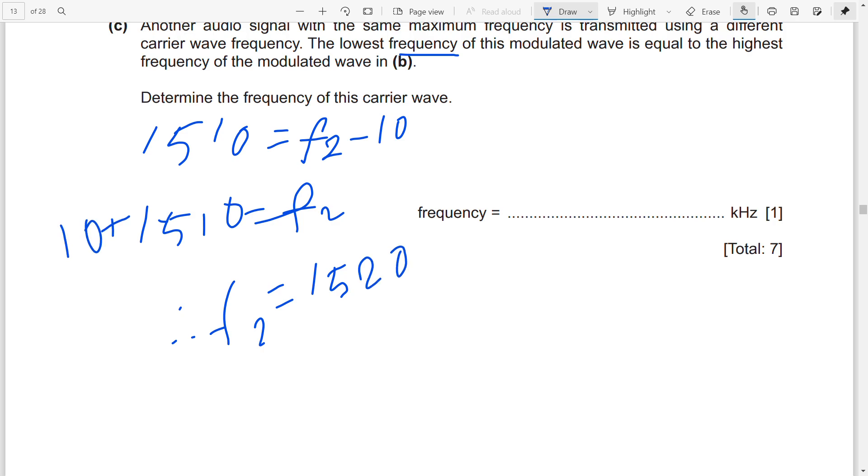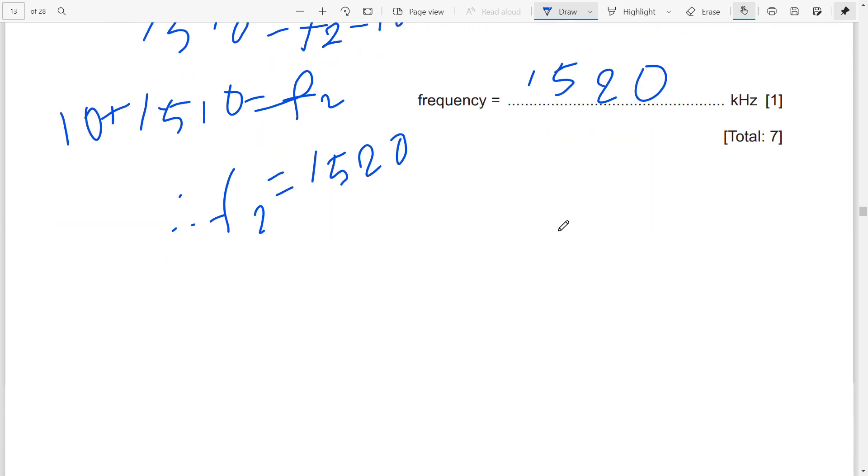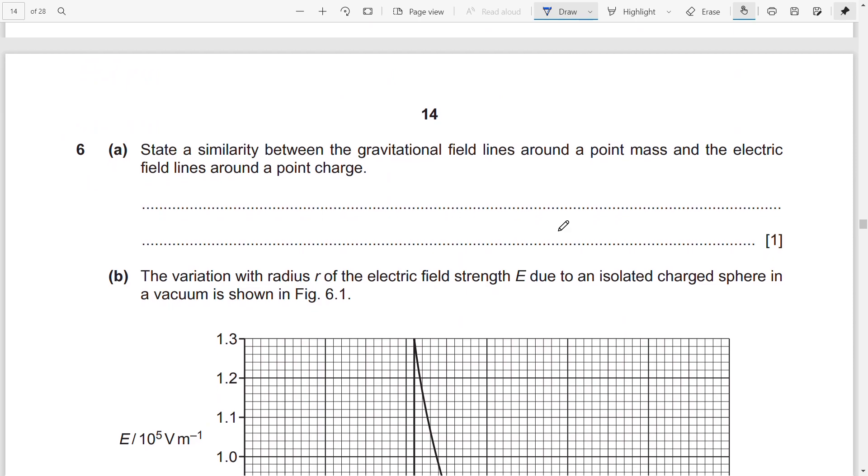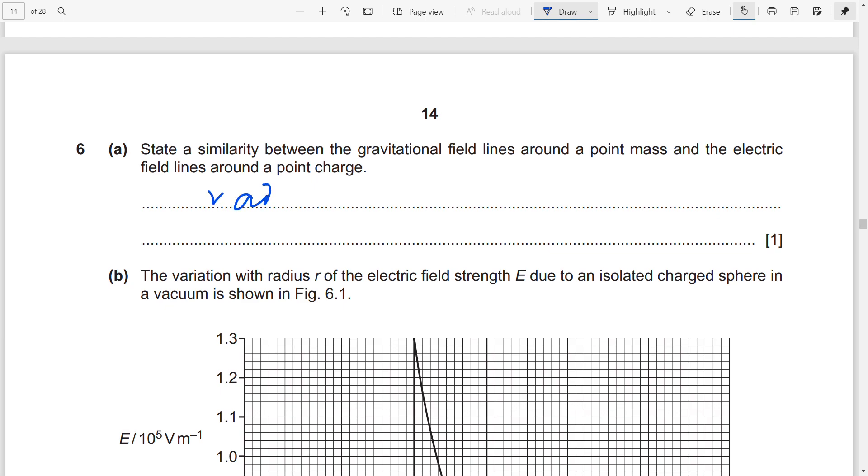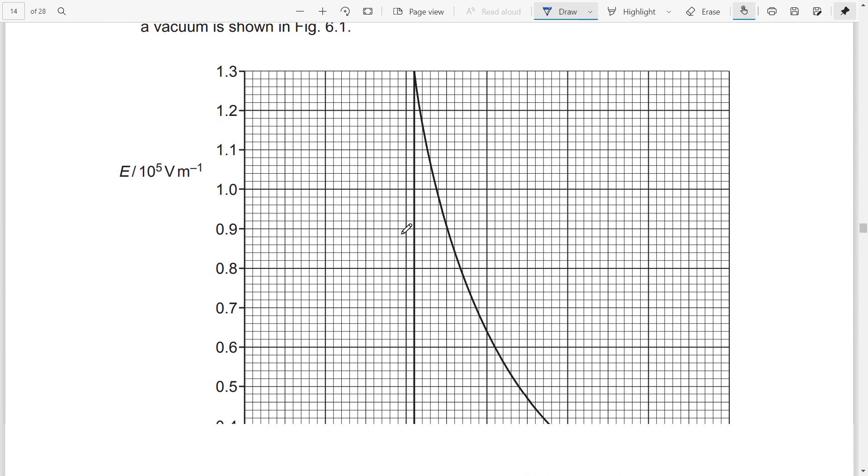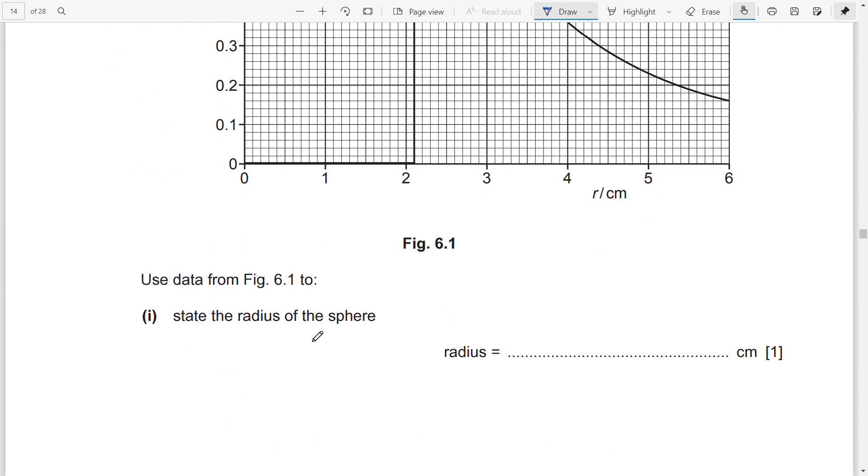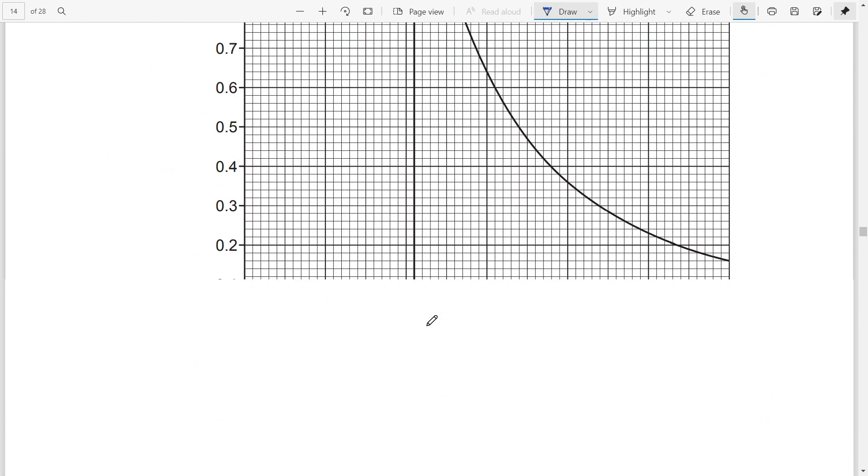Next question: state a similarity between the gravitational field lines around a point mass and the electric field lines around a point charge. You can write they are both radial and have the same inverse square law. Same inverse square law. I don't have a tablet so I'm writing it on my laptop. This is the radius of the sphere, so r = 2.1 cm.